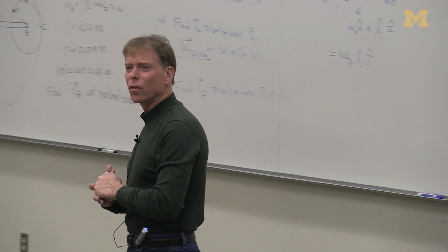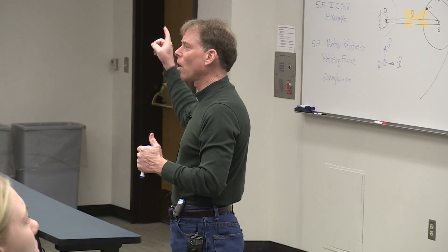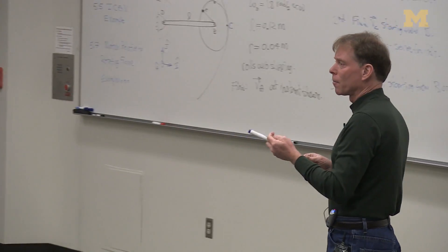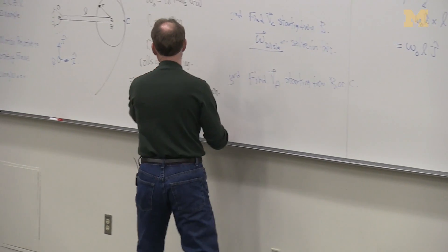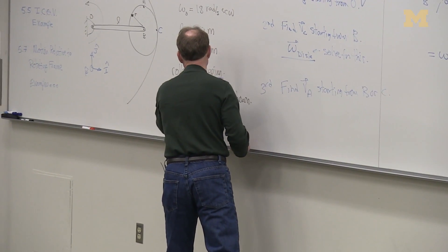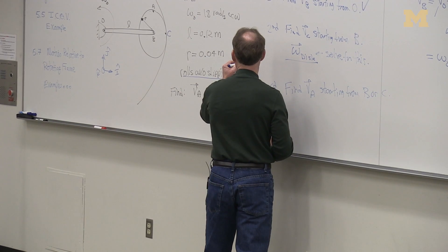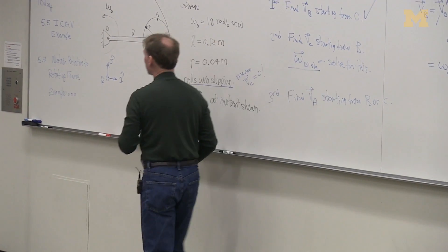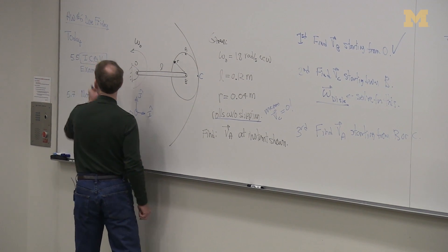Why did we pick point C? Why did we decide we want to calculate the velocity of C? Do we know anything about the velocity of C to begin with? Because it rolls without slipping, the velocity of C is zero. All right, so this is key: rolling without slipping means that the velocity of C is exactly zero. It is what we call the instantaneous center of zero velocity.